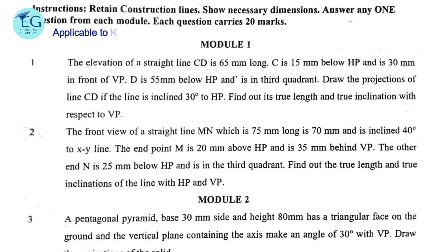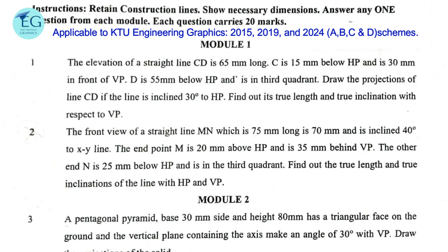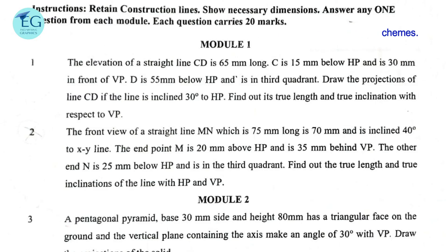The elevation of a straight line CD is 65 mm long. C is 15 mm below HP and is 30 mm in front of VP. D is 55 mm below HP and is in the third quarter. Draw the projections of line CD if the line is inclined 30 degrees to HP. Find out its true length and true inclination with respect to VP.